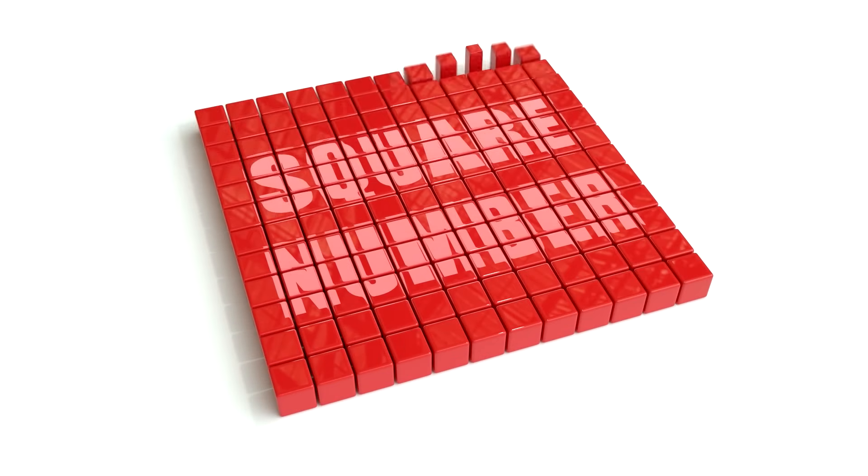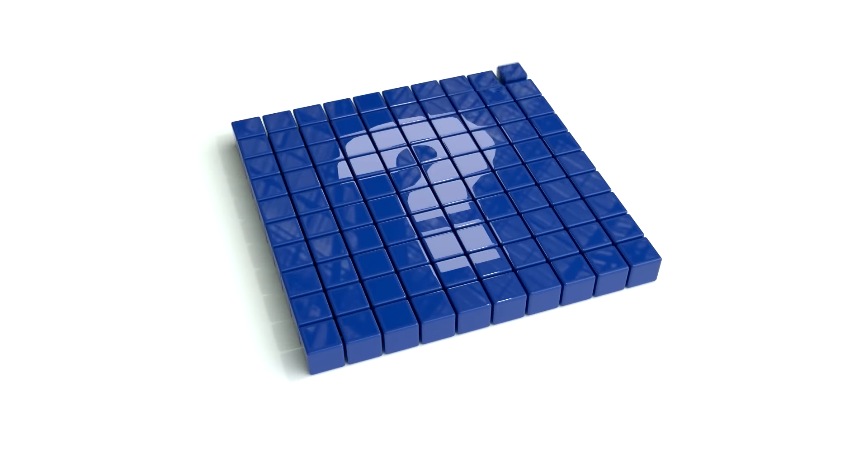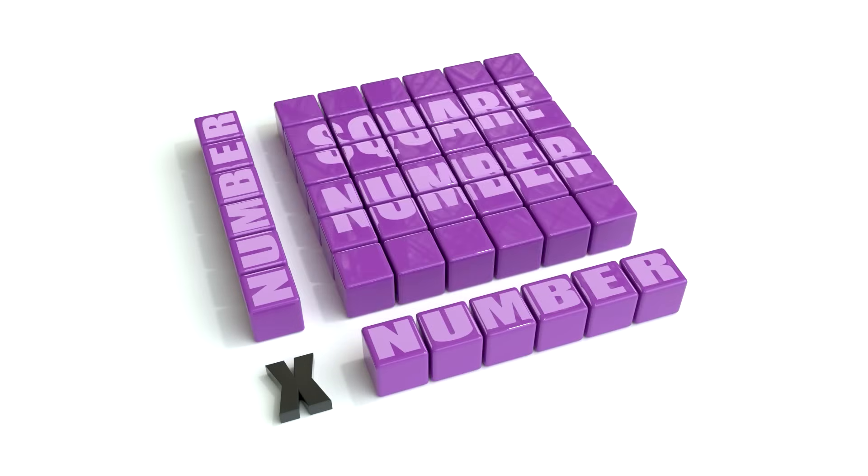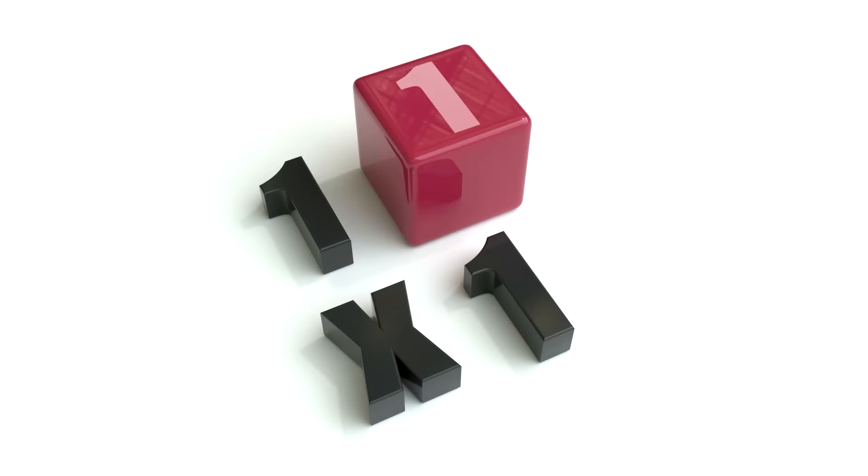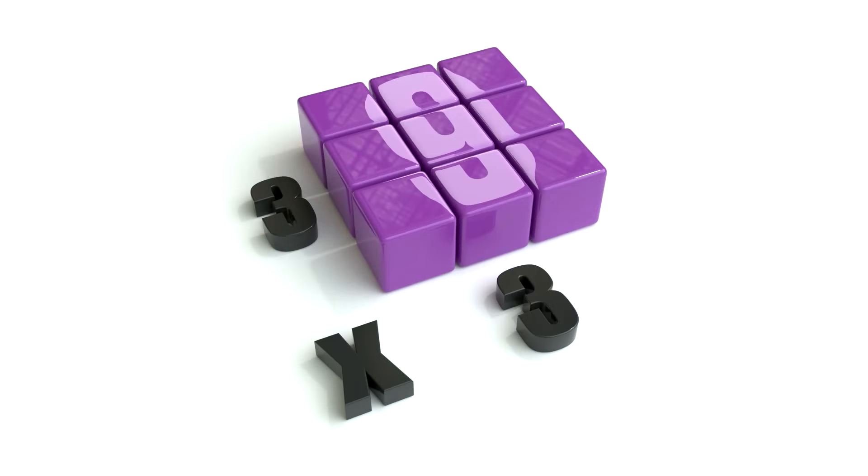I'm a square number, but how do you make me? You multiply a number by yourself. Just like one times one is one, and two times two is four, three times three is nine. We're square numbers.